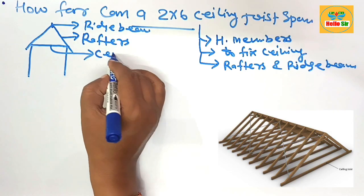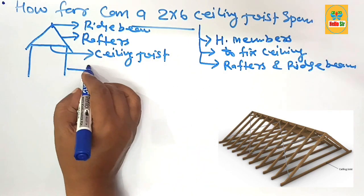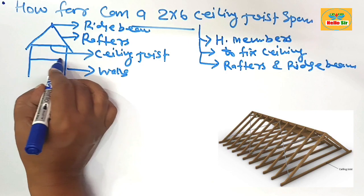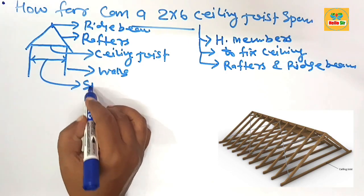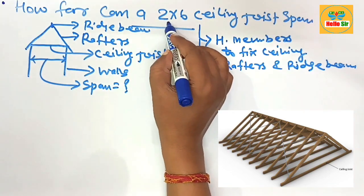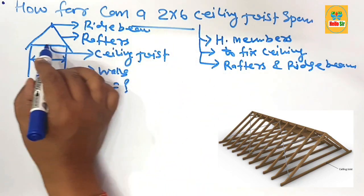And this one is your horizontal member that is the ceiling joist, and these are the supporting walls. The distance between two walls, that is the span. Your question is: what is the maximum span for a 2 by 6 dimensional lumber as ceiling joist?